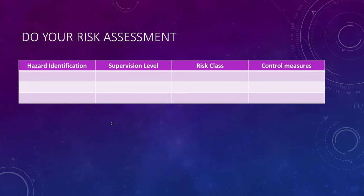First thing you need to do is your risk assessment, so don't forget to identify the hazards, the supervision level that you will use for each of those, some idea of the risk class high low medium, and then the control measures that you're going to put in place to control that risk.